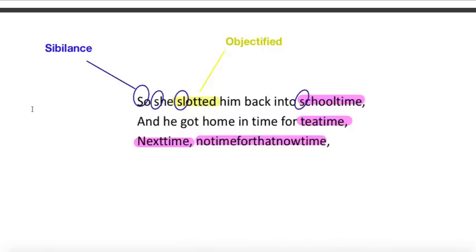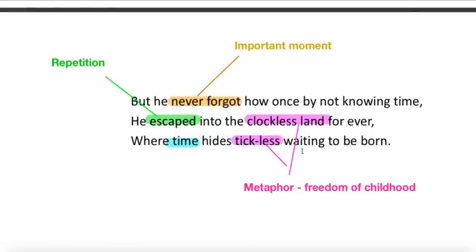So she slotted him back into school time and he got home in time for tea time. Next time, not time for that now time. So we've got sibilance here. You could argue that relates to the bitterness towards the teacher. Not always, but sibilance can create that kind of sinister effect. And I would argue that's what the case in this line. Also the word slotted suggests that she almost sees him like an object in my mind. And there's an image almost of like how you might slot a file into place. It's almost like she's picking him up and just putting him back in place. And again, I think that supports this kind of dismissive tone of her just kind of slotting him back and not really caring for him or she's definitely not apologetic about what she's done. And again, he's back to the times that he understands. Tea time, next time, not time for that now time. So he's back home.